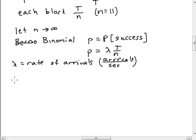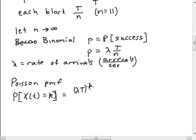What's going to happen as n goes to infinity? We're going to show that we're going to end up with this Poisson PMF. We're going to show that the probability that X(t) is equal to k is equal to (λt)^k times e^(-λt) over k factorial. And this is what we're going to show is true for any k equals 0, 1, and so on—any non-negative integer. And this is what we're going to show in the next lecture.